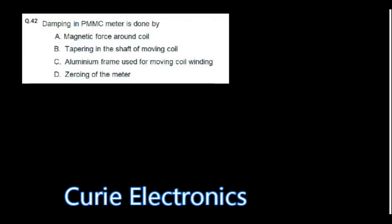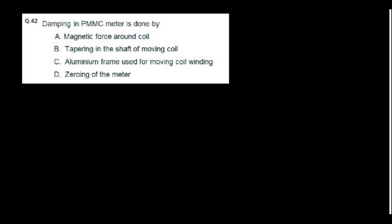Damping in a PMMC meter is done by the aluminium frame used for the moving coil winding. Eddy currents are developed on the aluminium frame, which act as a damping force.